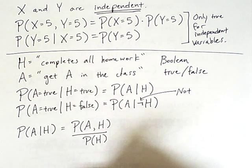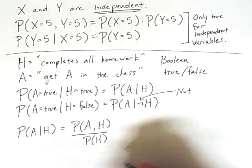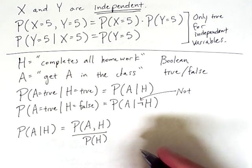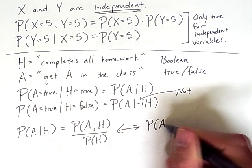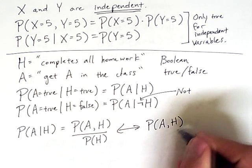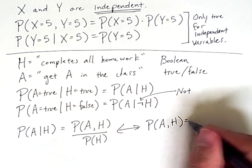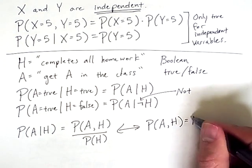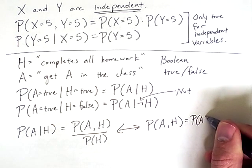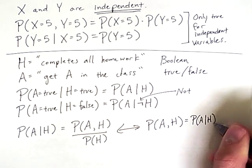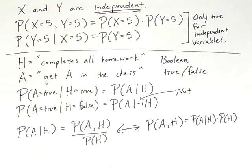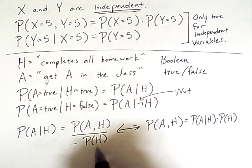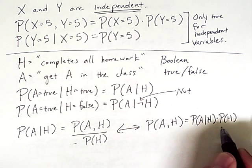One last thing worth pointing out, which is simple algebraic manipulation, is that if you encounter a probability like the following, probability of A and H, it should be clear to you that this is equal to the probability of A given H times the probability of H. All I did was multiply both sides of this equation by this denominator to get this result.